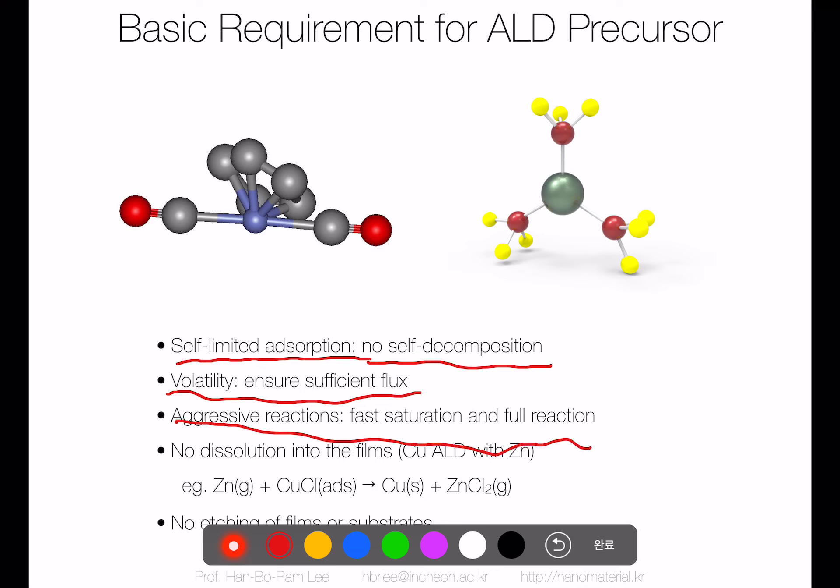The third requirement is aggressive reaction, fast saturation, and full reaction. That means once the precursor reacts with the counter reactant, the reaction should be very fast with no various byproducts. The delta G should be very negative — below zero — so that means we have an aggressive reaction.